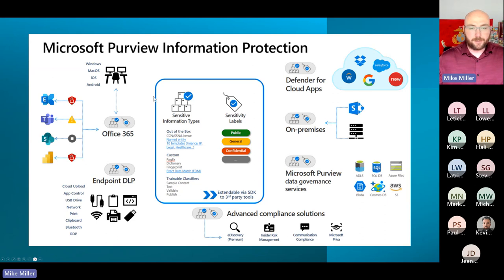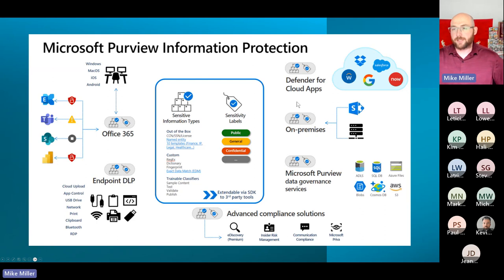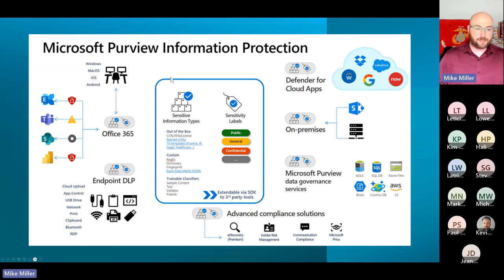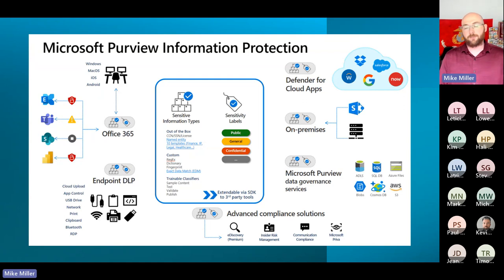These sensitive info types and sensitivity labels extend out into the different tools available within Purview. Microsoft Defender for Cloud Apps can protect your SaaS platforms like Salesforce, ServiceNow, Dropbox, and Box. You have on-premise capabilities if you're still running on-premise SharePoint or file shares. Of course you have your Office 365 capabilities as well as endpoint DLP. There are also advanced compliance solutions like e-discovery, insider risk management, and communication compliance — for example, preventing people from sending abusive words through Teams.